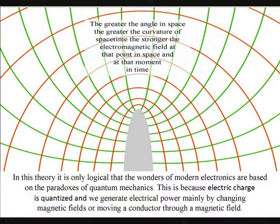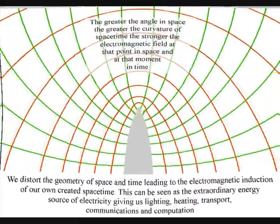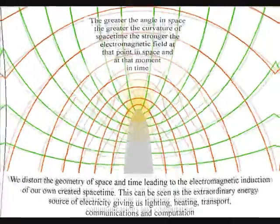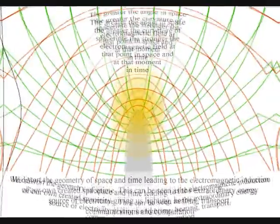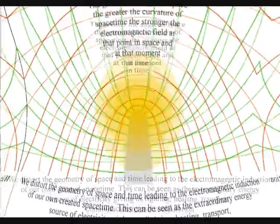This is because electric charge is quantized, and we generate electrical power mainly by changing magnetic fields or moving a conductor through a magnetic field. This will distort the geometry of space and time, leading to the electromagnetic induction of our own created space-time, in other words, electricity.